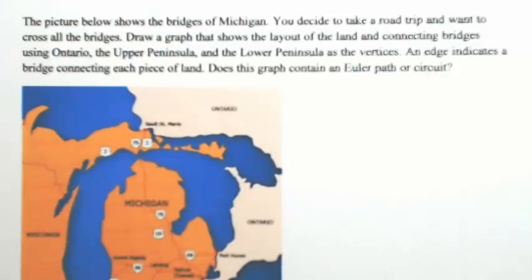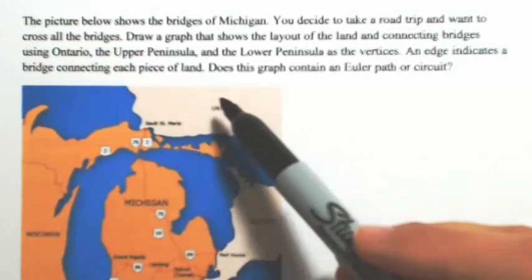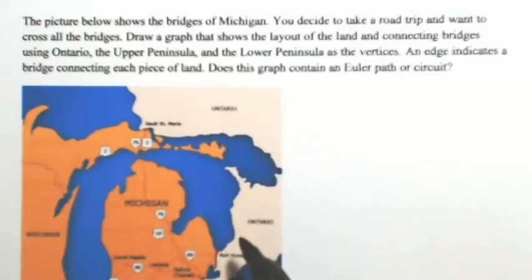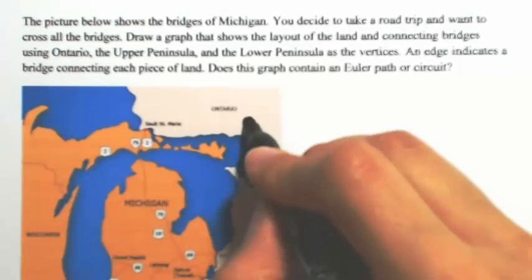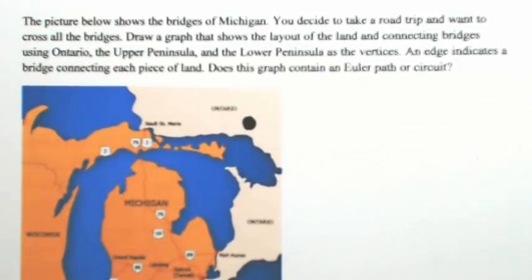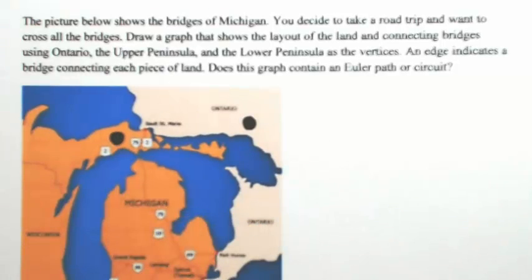So the first thing I want to do is mark out the pieces of land. They tell us to use a vertex for Ontario. In this picture, we can see that all of this land to the right is Ontario. So I'm just going to use one dot to represent that. We'll use another dot for the Upper Peninsula and then a dot for the Lower Peninsula.